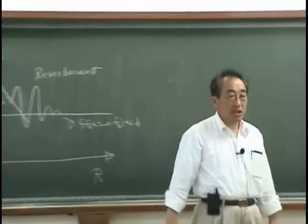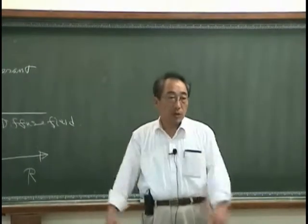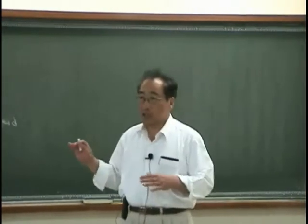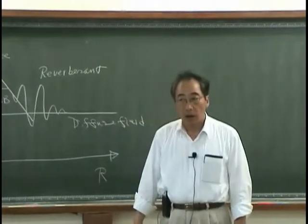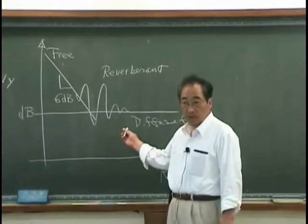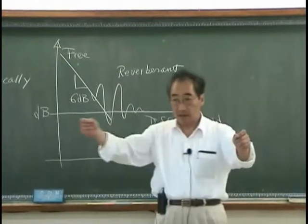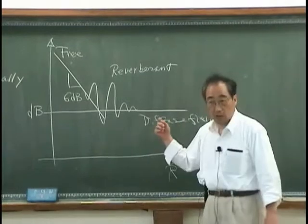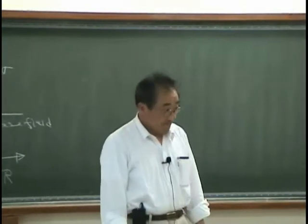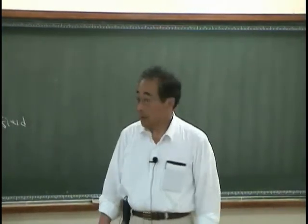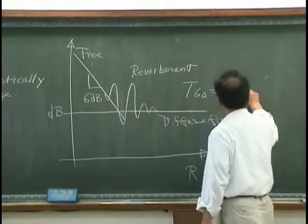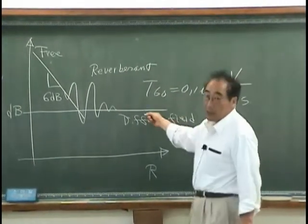Therefore, it is quite easy to see whether or not this is diffuse field or reverberant field or free field, by just measuring the sound at any point and plotting it. If it is constant, then we can call it diffuse field. And if it is 6 dB per doubling distance, then we call it free field. And the Sabine theory actually works in this diffuse field.